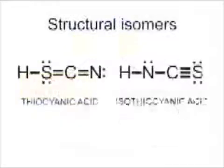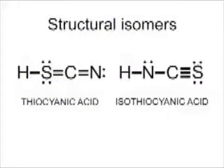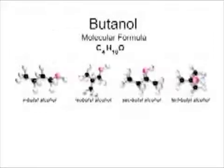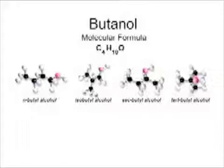So also are thiocyanic acid and isothiocyanic acid. Structural isomerism is very common in organic chemistry. For example, consider the isomers of butanol with molecular formula C4H10O.